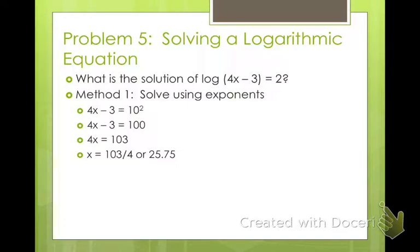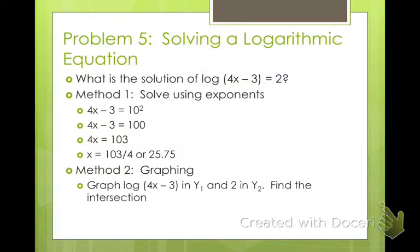So that's one way to do it. This is probably going to be your best bet. You can also do these by graphing. Do the same thing you did before. Your y1 is going to be your left side of the equation, log 4x minus 3. And then your y2 is going to be your right side of the equation, 2. Graph them both, find where they intersect. You're going to get the same answer. It's going to be 25.75.